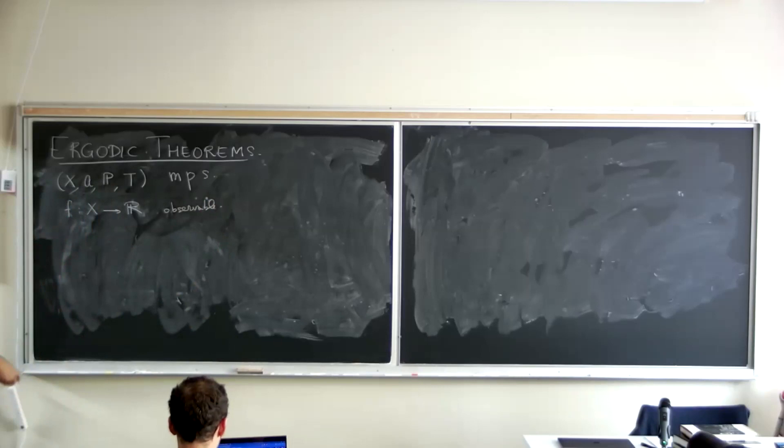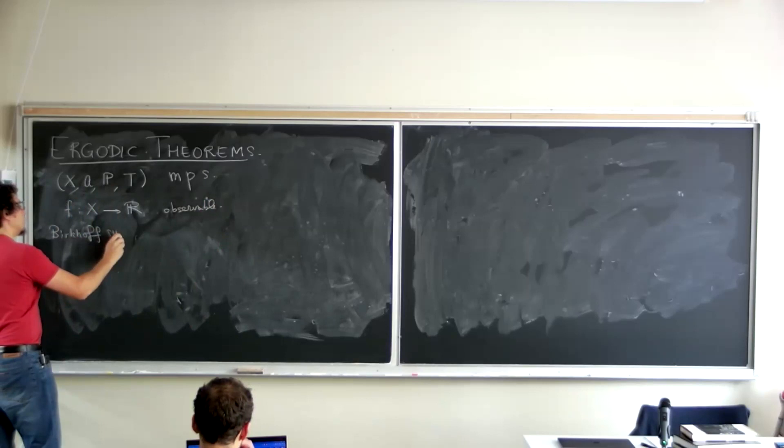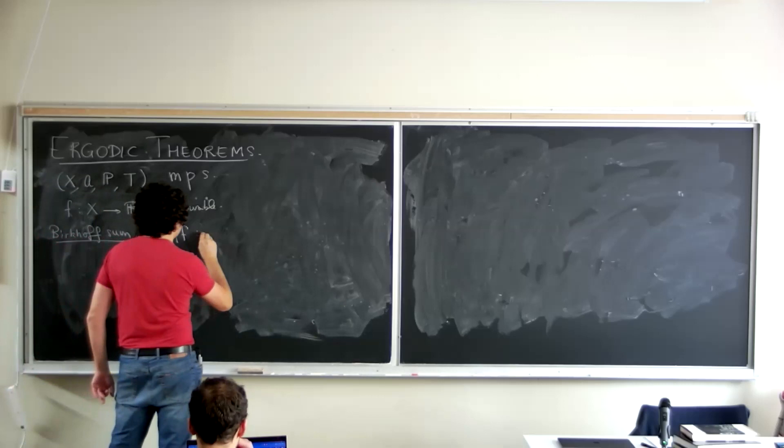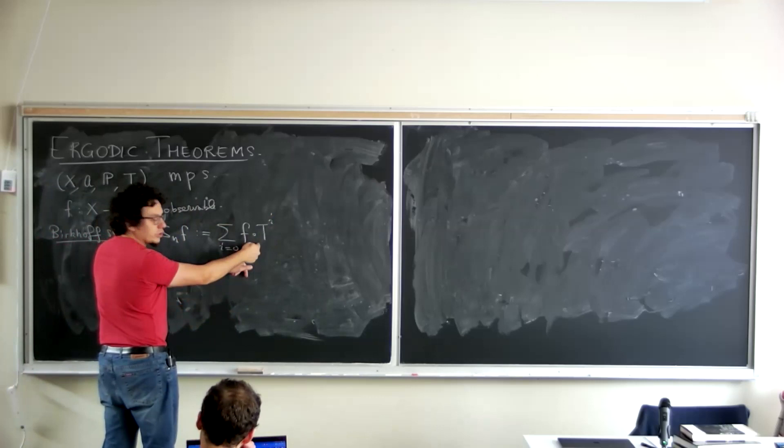Recall that whenever you have an observable, you can define the Birkhoff sum S_N F, which is just the sum of F composed with T along the orbit. Traditionally, we start with time zero, meaning F of today — we don't apply T — to N minus 1, to make sure that there are N terms.